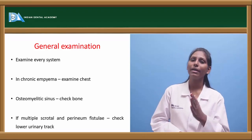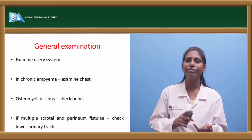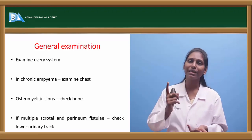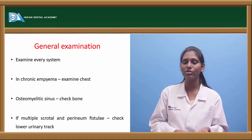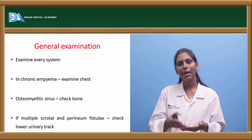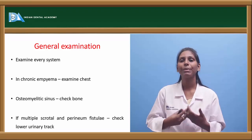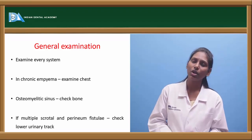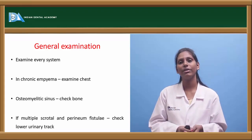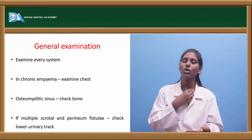In general examination, examine every system. In case of chronic empyema, examine the chest. In case of an osteomyelitic lesion, examine the bone — check for any infective origin. For an osteomyelitic lesion of the mandible, check for any offending tooth, caries, fracture site, or non-healing malunion of a fracture site — all these can predispose to a chronic osteomyelitic sinus.